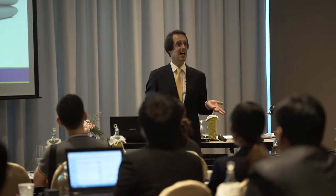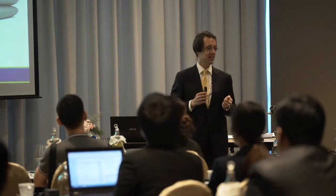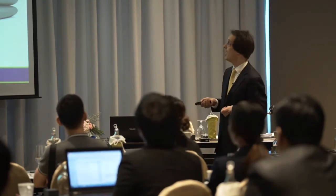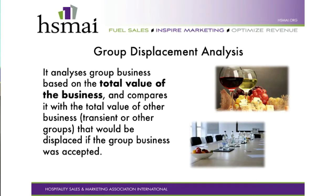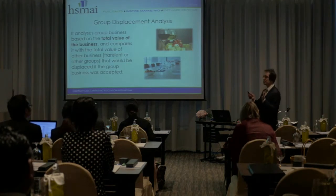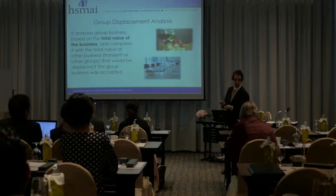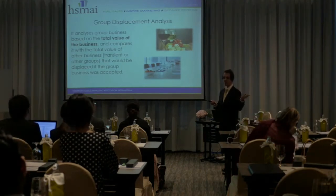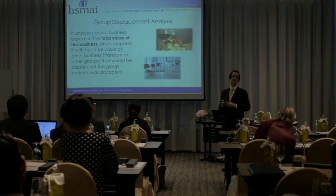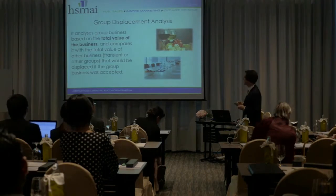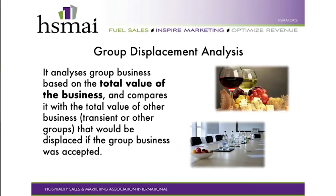But if you have competing businesses where one is more valuable than the other, you have to make the right choice to take the business which optimizes your revenue and profitability. You can displace one segment for another — for example, BAR business with contracted business or BAR business with OTA business. This afternoon we are talking specifically about group displacement analysis: the total value of the group business compared with the total value of other businesses.